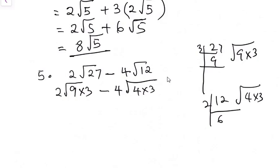And usually what we are looking for is a complete root and an incomplete root that will become an irrational number. And we have it in both instances. So we can now break it into two. √9 multiplied by √3 minus 4 into √4 multiplied by √3.